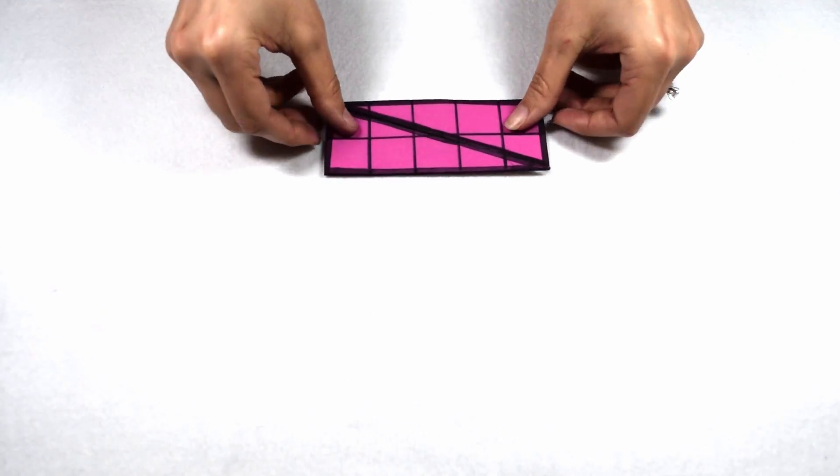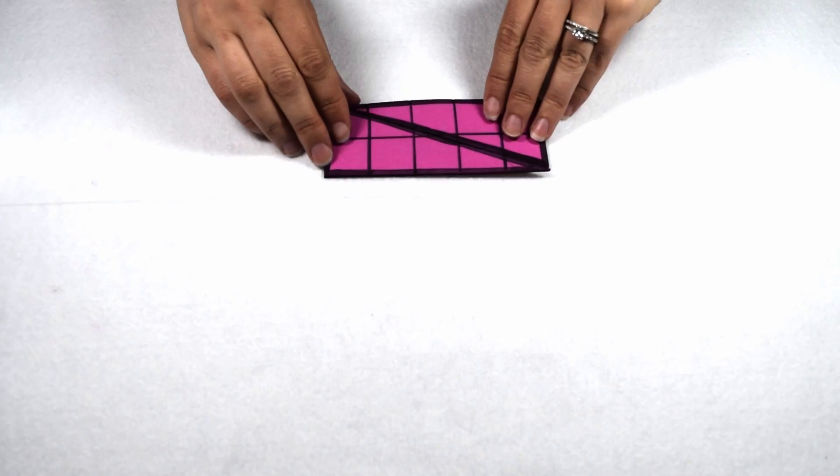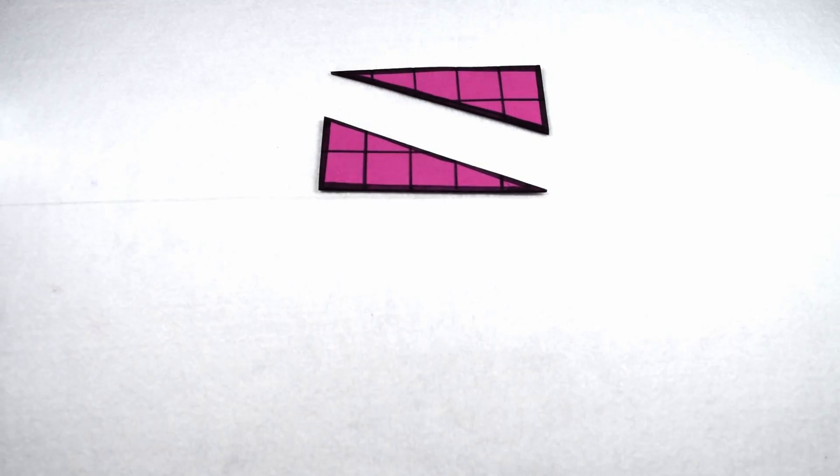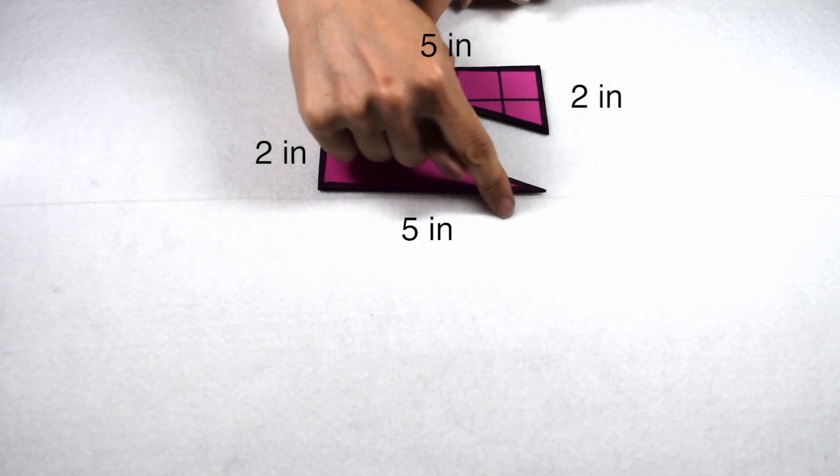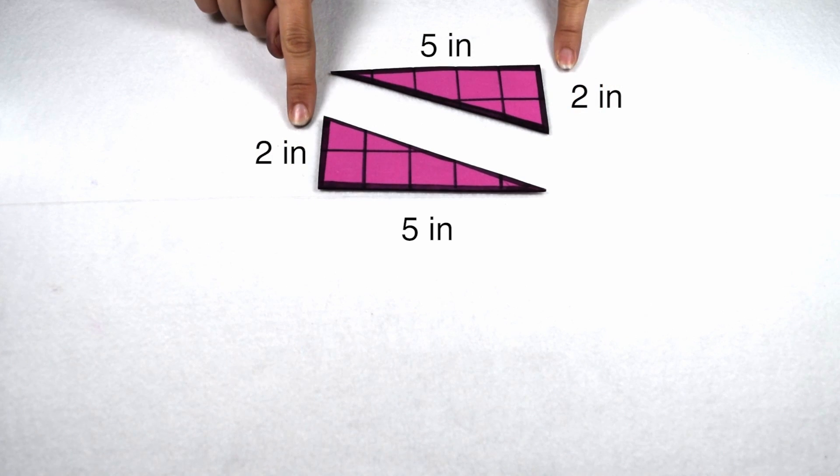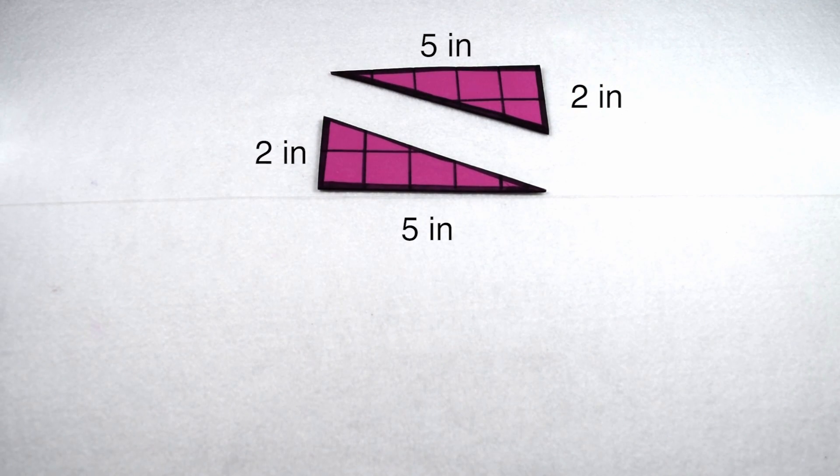I can then take my rectangle and cut it on the diagonal. When I cut it on the diagonal, that gives me two triangles. Each of these triangles has a base of 5 and a height of 2. I also know that each of these triangles represents half the rectangle, so the area of each triangle is half of the 10 square inches, or 5 square inches each.